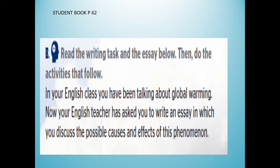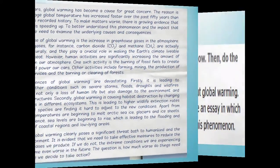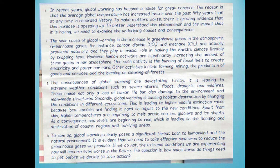Exercise B. Open page number 60 in the student book. Read the writing task and the essay below, then do the activities that follow. In your English class, you have been talking about global warming. Your English teacher has asked you to write an essay discussing the possible causes and effects of this phenomenon. Here is a model consisting of four paragraphs: paragraph 1 is the introduction, paragraphs 2 and 3 are the main body paragraphs, and paragraph 4 is the conclusion.